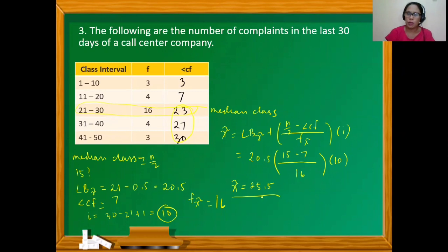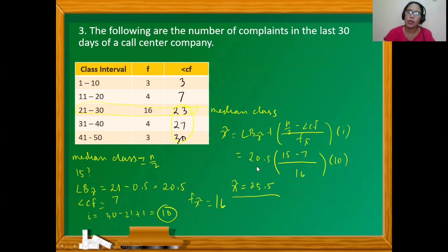The median number of complaints is 25.5. This means there are 15 days with a number of complaints less than 25.5 and another 15 days with greater than 25.5 complaints. I hope you were able to understand the discussion on grouped median. Next, I'll be discussing the mode of the grouped data. Bye for now.